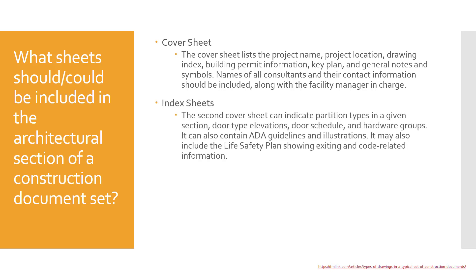Index sheets are kind of like a second cover sheet and can indicate things like partition types, door type elevations, door schedules, and hardware groups. They might also contain ADA guidelines and illustrations — like how high or low things should be installed and what the clearances are. They can also include life safety plans showing exiting and code-related information in case of a fire. The amount of information between cover sheets and index can vary from one page to five pages, depending on the firm and the project.